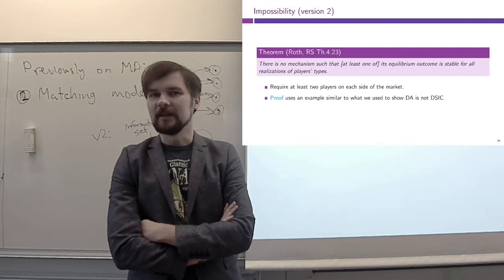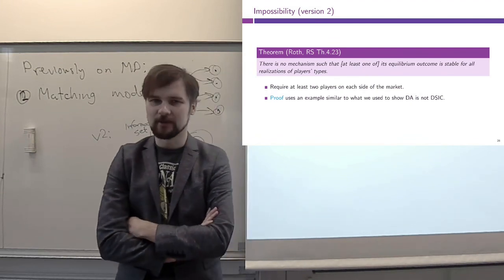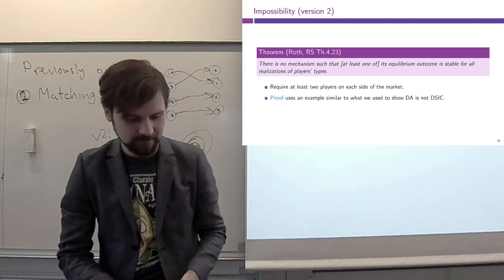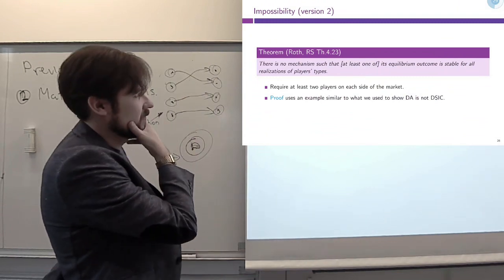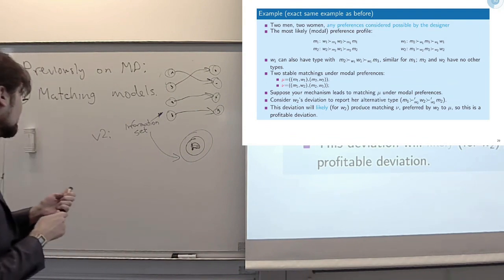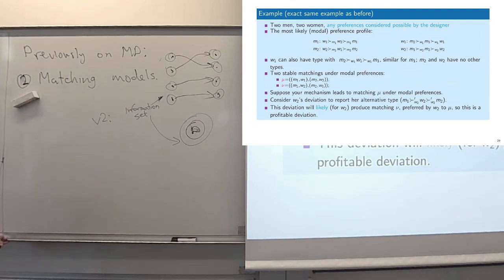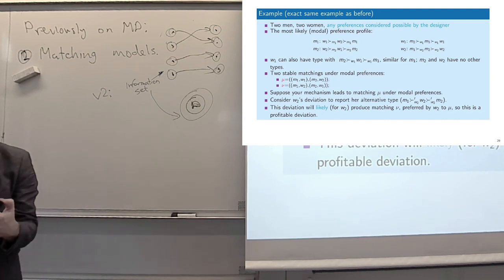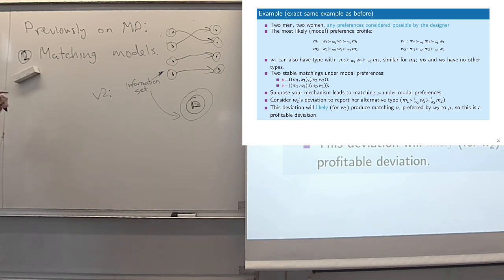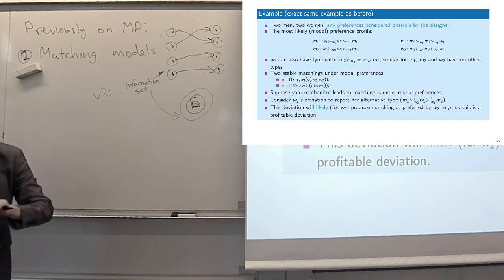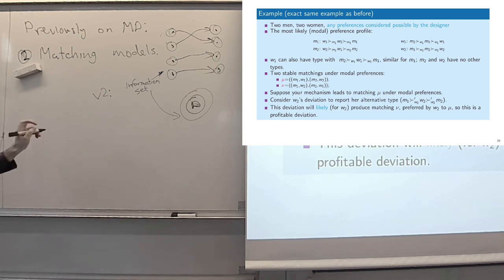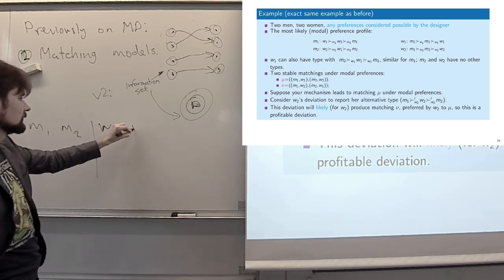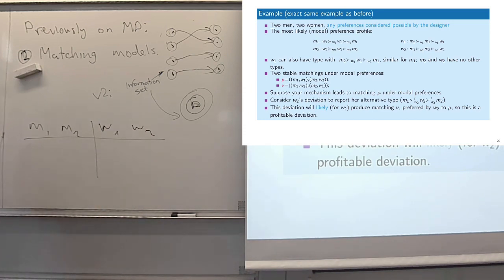Why is that? We can use the same example we had before. You can think of it as follows: a two-by-two marriage market with two men and two women. m1 and w1 have single types, meaning everyone knows their preferences for sure. Their preferences are: m1 prefers w1 then w2, and w1 prefers m2 then m1. For m2 and w2, they each have two types: theta_mA, theta_mB, theta_wA, theta_wB.